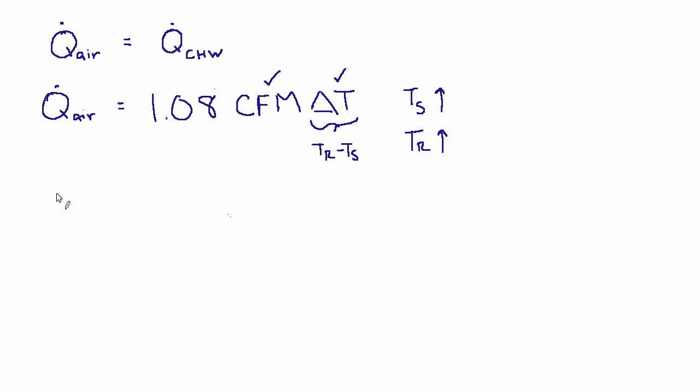So now that's the air side. Let's look at what's happening on the chilled water side. So again, the heat load is the same. And our rule of thumb equation for heat load on the water side is 500 GPM delta T.